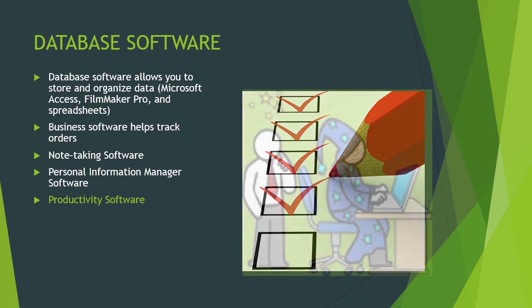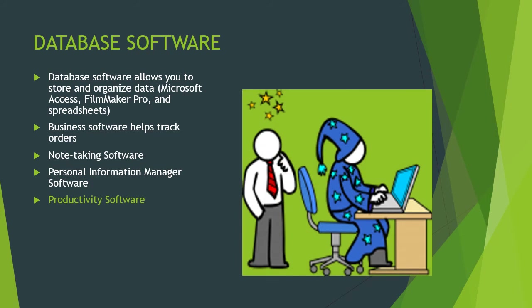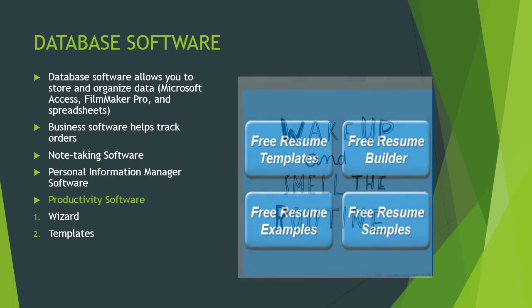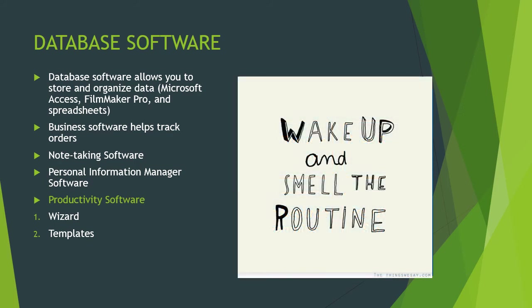Productivity software like Wizard actually helps you through the steps when you're installing a program or completing a complicated task. A template, such as free resume templates or pre-designed forms, is another productivity application. A macro is a small program that groups a series of commands so they run as a single command. For example, a teacher might use a macro to sort grades in descending order below a C average, so every time she adds an assignment or test result, the macro runs through the series of steps automatically.